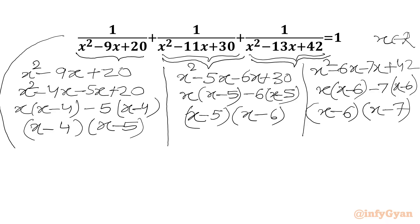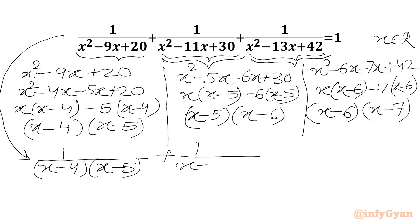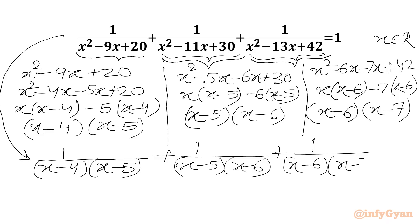Now we will write our equation: 1 over (x minus 4)(x minus 5), plus 1 over (x minus 5)(x minus 6), plus 1 over (x minus 6)(x minus 7) equals 1. Now denominators cannot be 0, so x cannot equal 4, 5, 6, or 7.